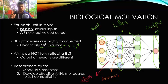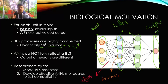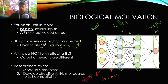So one neuron is connected to nearly 10,000 others, which is amazing. ANNs do not fully reflect BLS. As mentioned, the output of the neurons is different. Researchers are following two different paths, but what we're interested in for this series is the latter case — where we don't care about similarity to BLS processes, but are just trying to develop effective artificial neural networks with no regard to compatibility with biological learning systems.